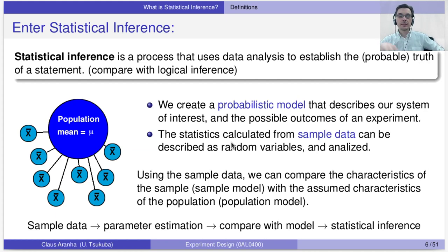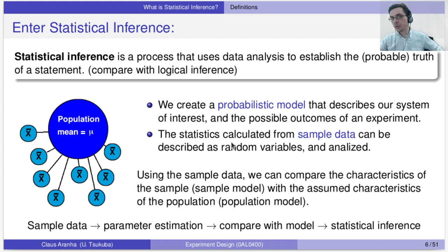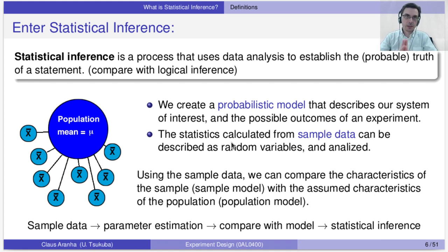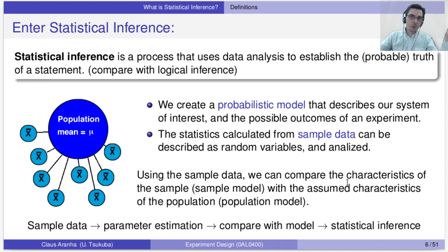The idea of statistical inference is that it's a technique that uses data analysis to establish the probable truth of a statement. Maybe you studied logical inference during your undergraduate school — if A implies B and A is true, then B is true. Statistical inference is similar: you're using statistical data to prove the probable truth of a statement. So how does it work? First, we create a probabilistic model that will describe our system and the possible outcomes of an experiment. Then we calculate statistics from sample data, described as a random variable. Using this sample data, we compare the characteristics of these statistics with the characteristics of the model to see if they match.